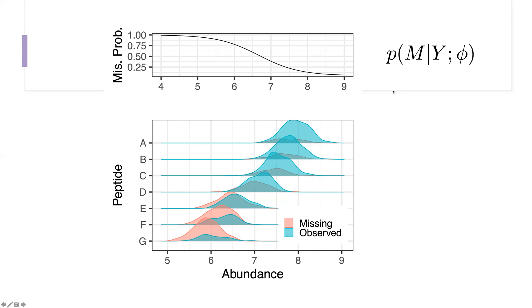The particular example I just described where the probability of missingness depends on the abundance of the peptide is something that we sometimes call self-masking missingness, because the probability that peptide I in run J is observed depends only on its own abundance.